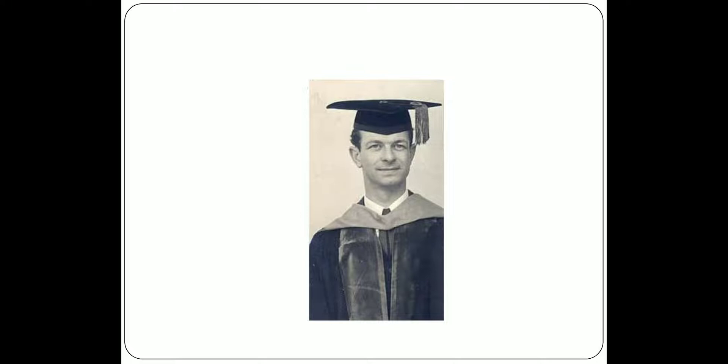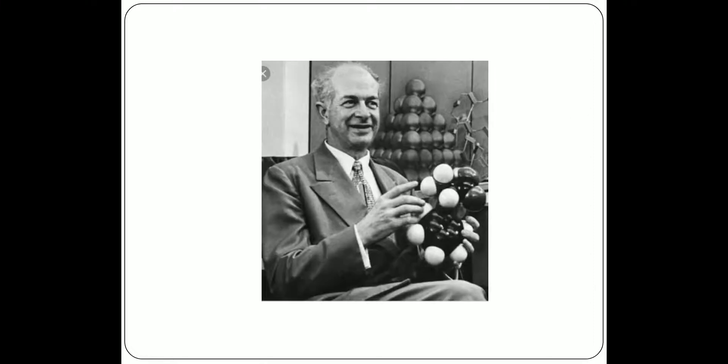During the 1920s there was significant development in the field of quantum mechanics. This development had a great impact not only on physics but also on chemistry. Linus Pauling was the person who used quantum mechanics to understand and describe chemical bonding — that is, the way atoms join together to form molecules.